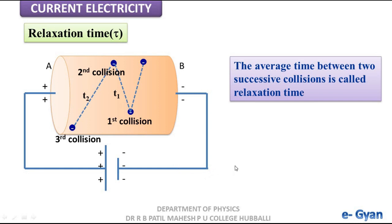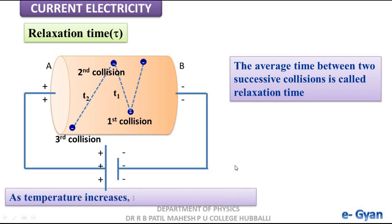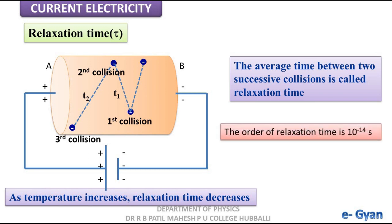Let us see how relaxation time depends upon temperature. As temperature increases, relaxation time decreases. If the temperature of the conductor increases, the free electrons inside the conductor will gain thermal energy. Due to this thermal energy, the free electrons will move with greater velocity, hence they take lesser time between two successive collisions. Therefore, if temperature increases, relaxation time decreases. The order of relaxation time is 10 to the power of minus 14 seconds — it is a very small time, meaning collisions will be very fast between the electron and ions.